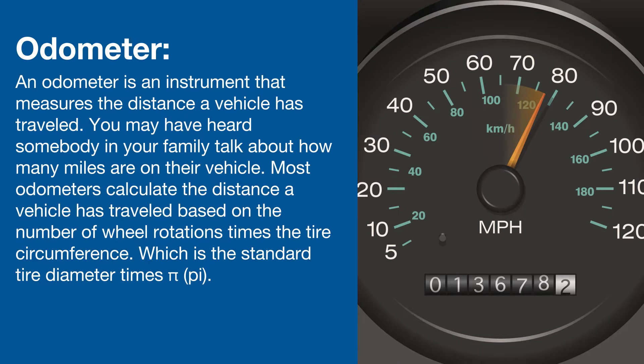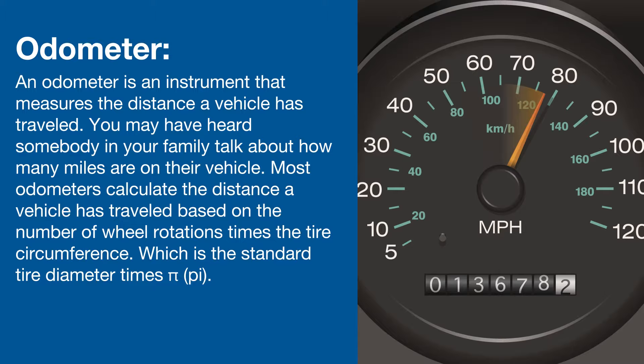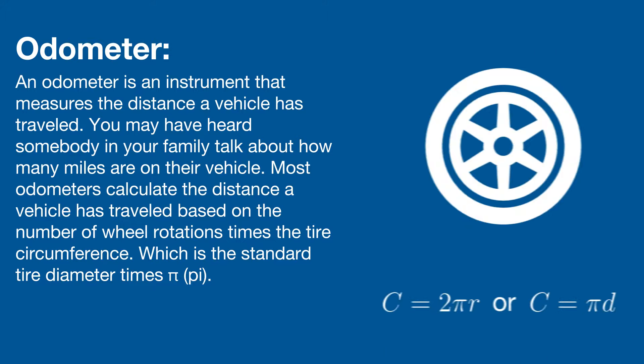An odometer is an instrument that measures the distance a vehicle has traveled. You may have heard somebody in your family talk about how many miles are on their vehicle. Most odometers calculate the distance a vehicle has traveled based on the number of wheel rotations times the tire circumference, which is the standard tire diameter times pi.